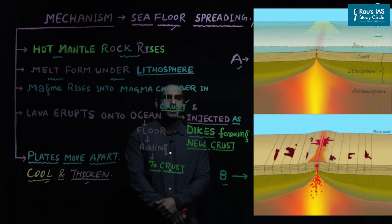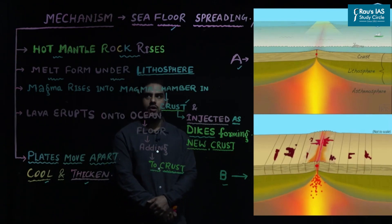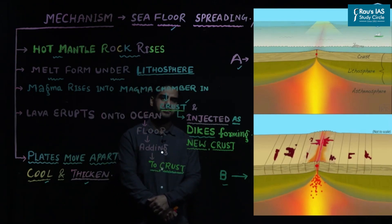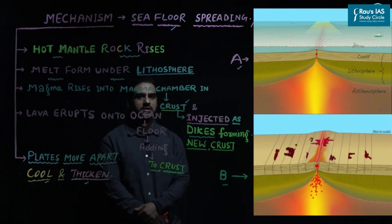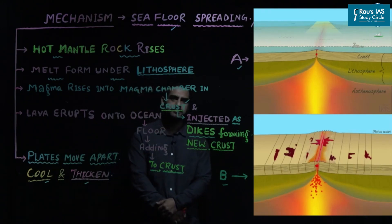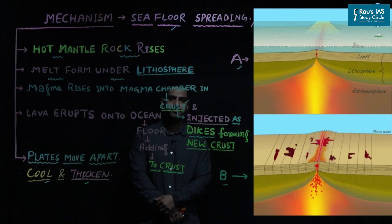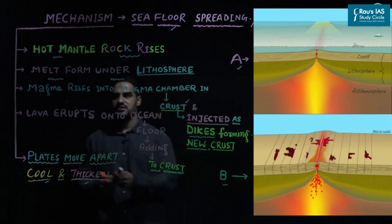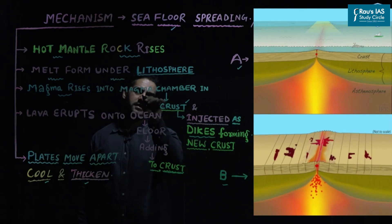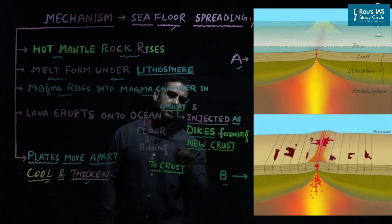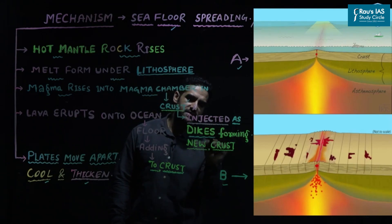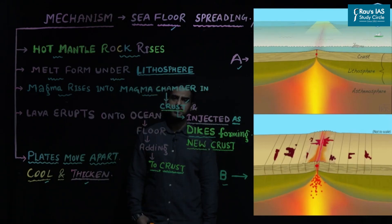In figure A, hot mantle rocks rise due to high convection in the asthenosphere. These rising hot mantle rocks accumulate at the bottom of the lithosphere and a melt is formed there. With high temperature, low pressure conditions prevail and the lithosphere continuously melts. The thickness of the lithosphere increases and magma finds a way to enter into the crust. This rise in magma enters the magma chamber, then into the crust and is vertically injected as dikes. It breaks the crust into two parts and the crust moves apart.